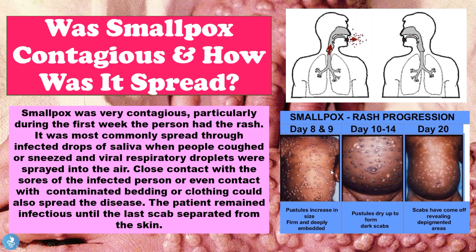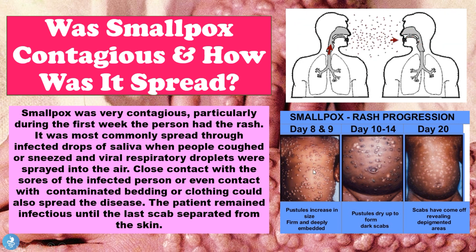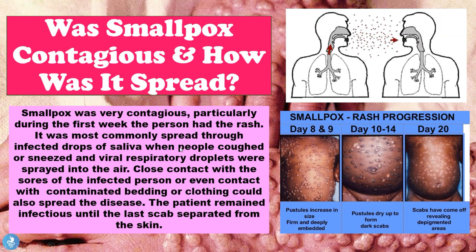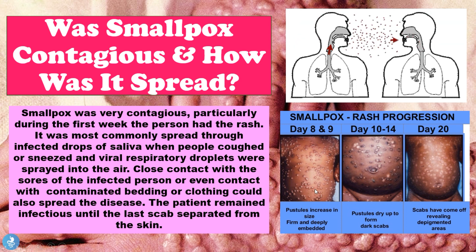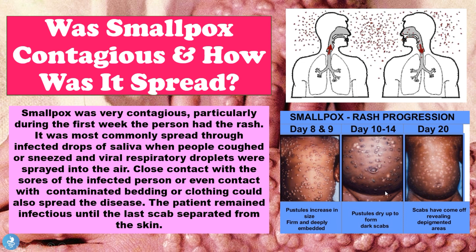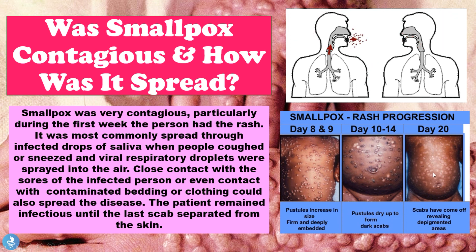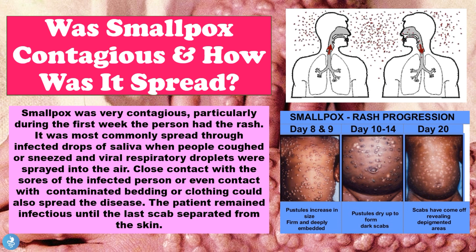For example, if a child had contracted the disease, any one of their siblings who touched the sores on their body would contract the disease, or if the child went to school they could infect multiple children in the class. The disease spread not just through nasal or salivary droplets but also from direct contact with the skin rash, and the patient would remain infectious until the last scab separated from the skin. The rash progressed from pustules on day eight and nine, which increased in size and were firm and deeply embedded, to dark scabs forming from day 10 to 14, with scabs falling off around day 20, revealing depigmented areas of skin.